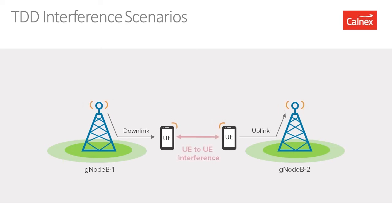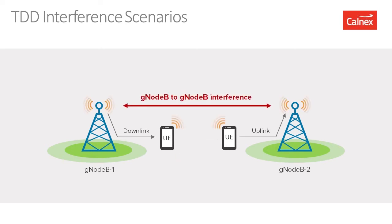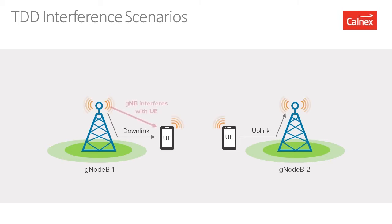The first scenario shown here is interference between UE to UE — user equipment for 5G where one is in downlink mode and one in uplink transmission can interfere with each other. The second scenario is where the gNodeBs themselves interfere with each other. In fact there are four scenarios in total, including combinations where a gNodeB interferes with a UE or a UE interferes with an adjacent gNodeB.